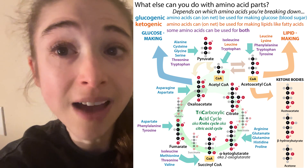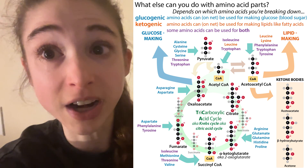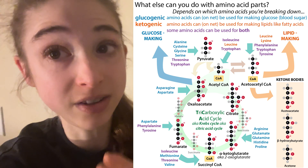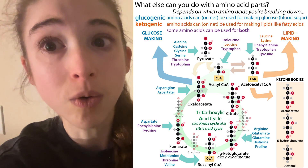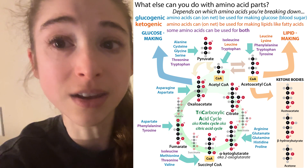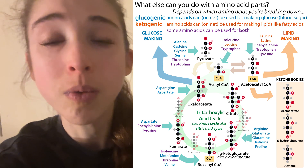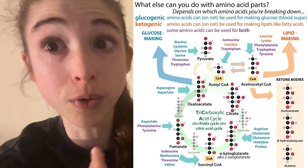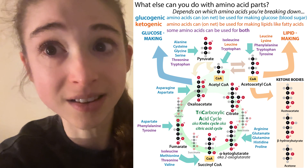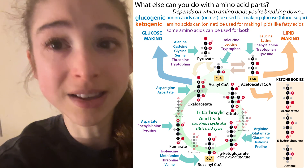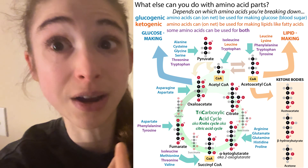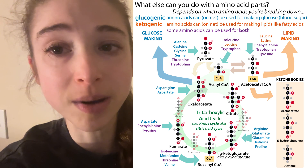When we have these ketogenic amino acids, they're getting broken down into acetyl-CoA, and these can be joined up to make ketone bodies, which can provide energy to fuel the brain. They can also be used to make lipids and things of that sort.